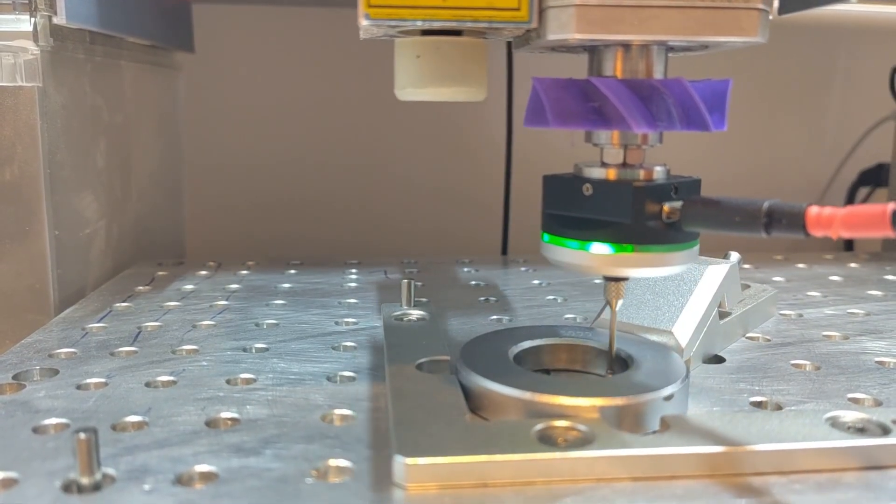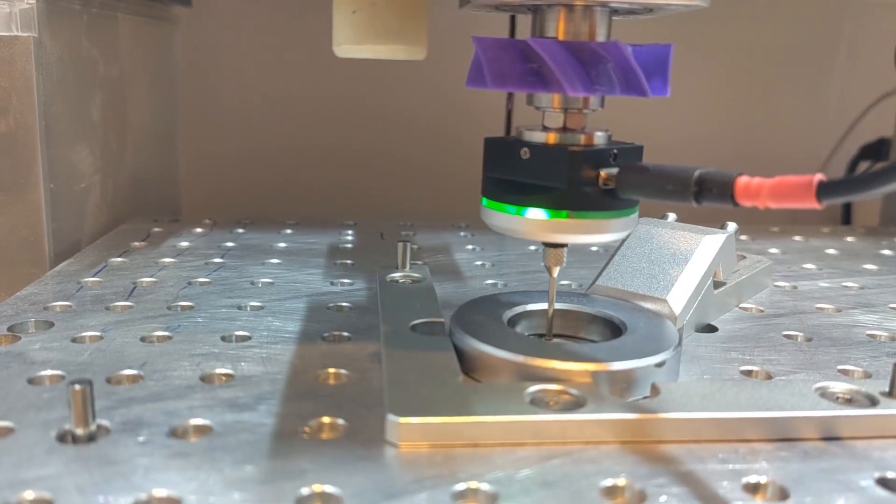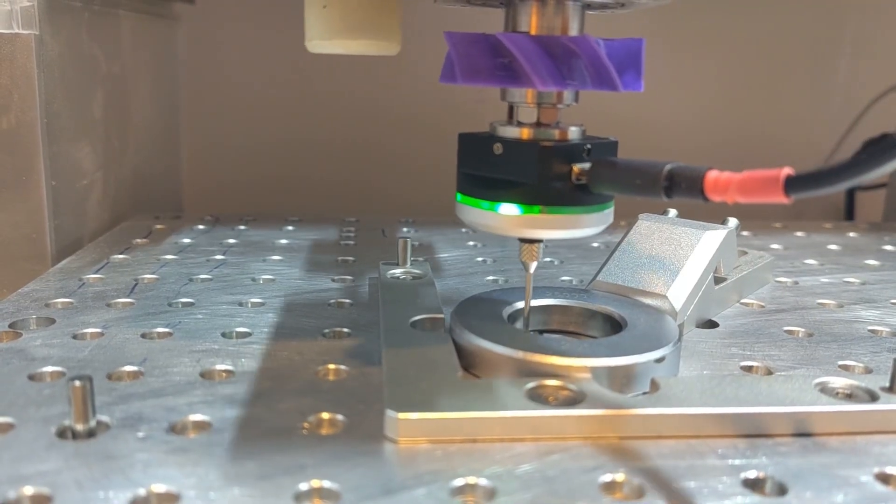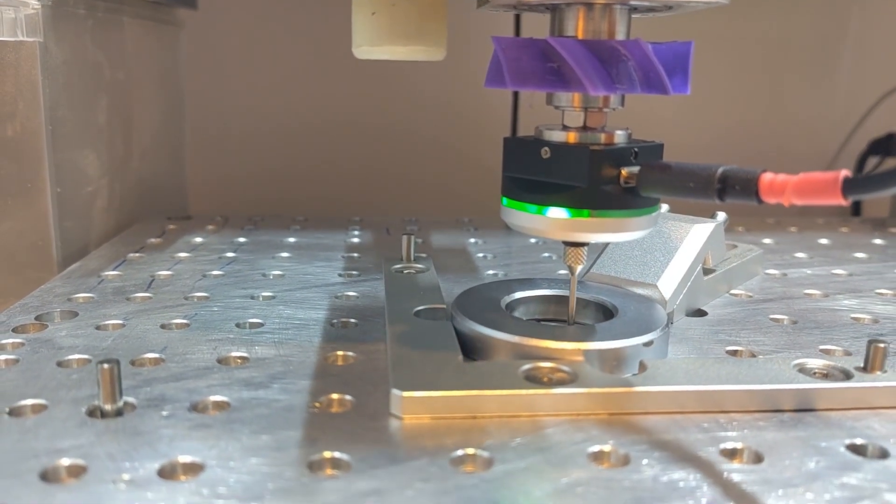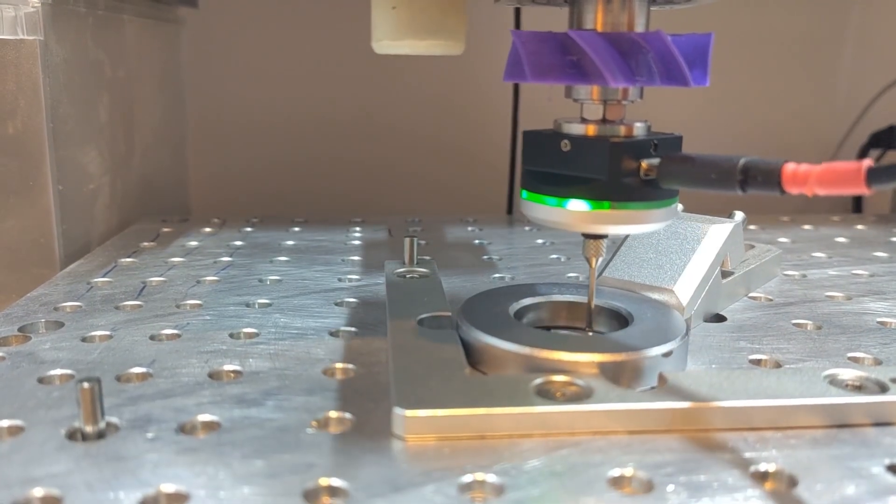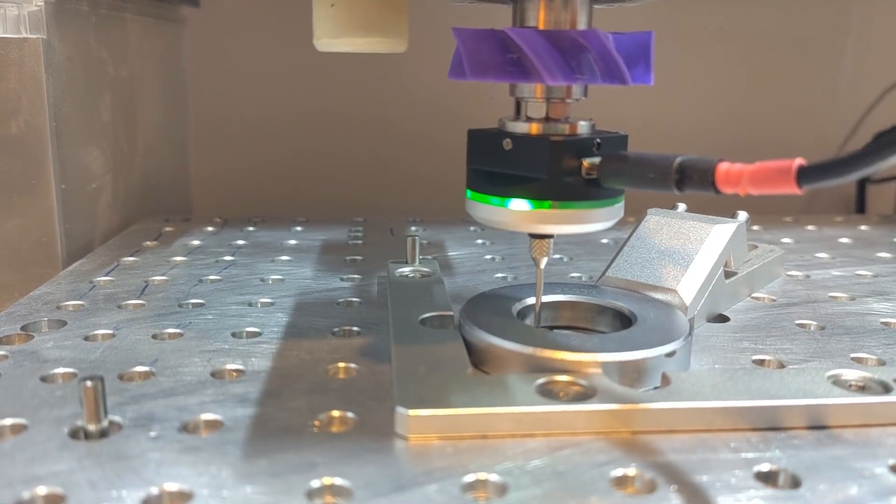This video will show you how to calibrate your 3-axis probe for centering and how to find the probe tip diameter. Following these steps will ensure your probe is as accurate as it can be. For instructions on wiring the probe to your machine and more info on the probing commands available, see the links in the description.